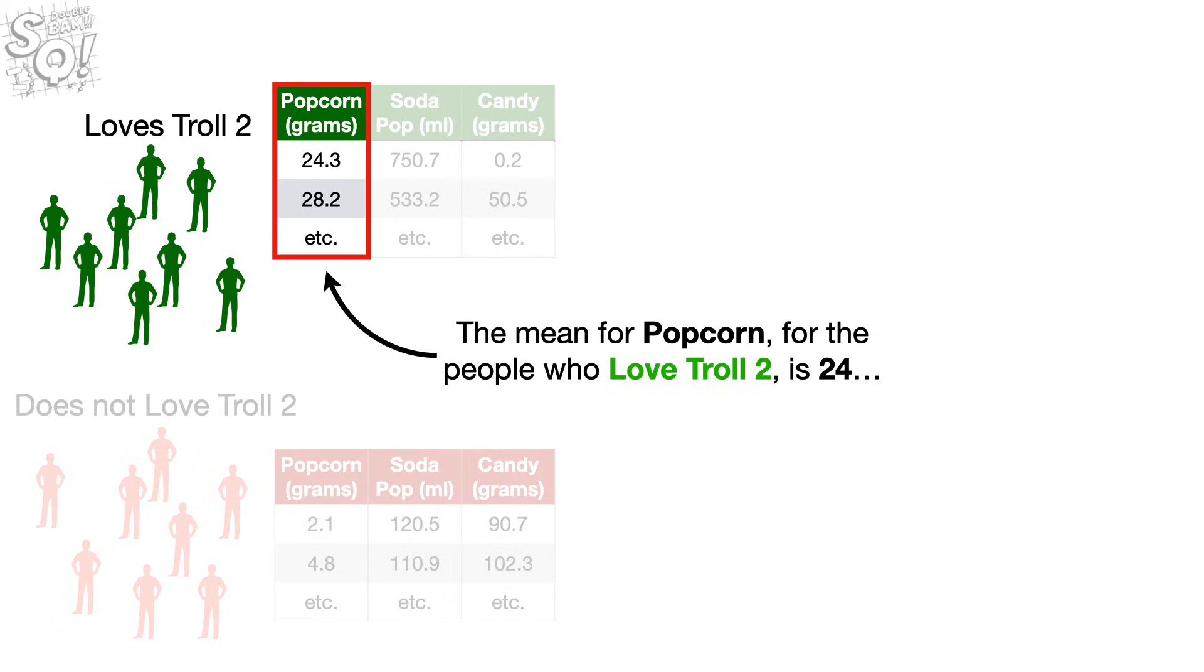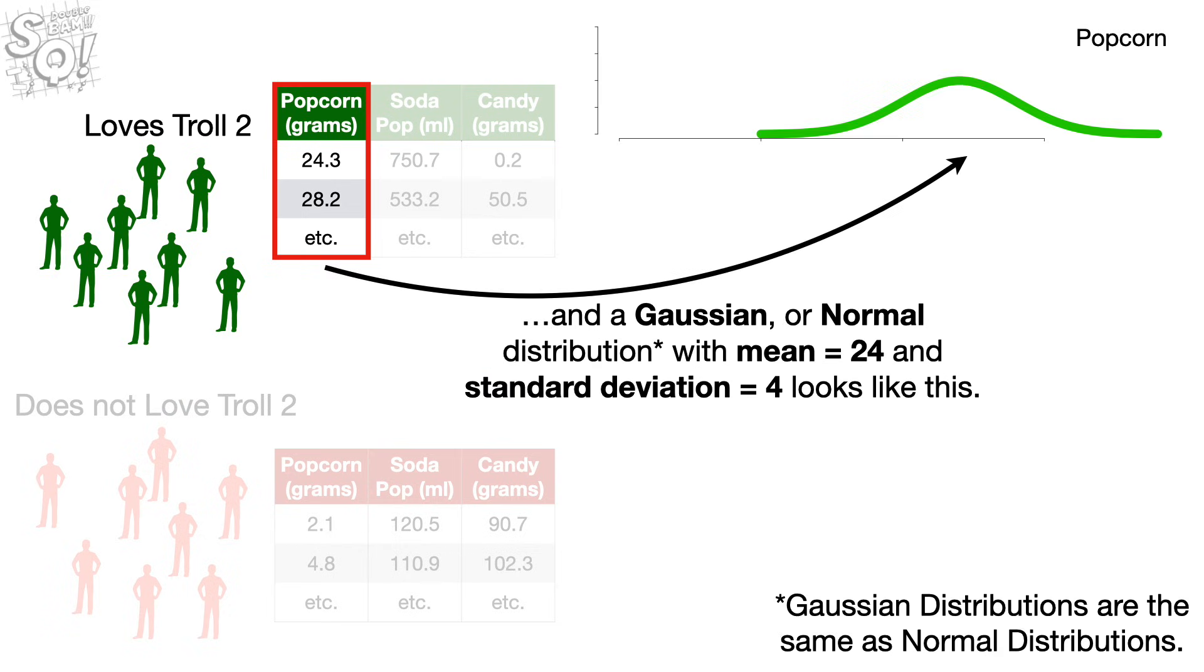The mean for popcorn, for the people who love Troll 2, is 24. And the standard deviation is 4. And a Gaussian, or normal distribution, with mean equals 24 and standard deviation equals 4, looks like this.